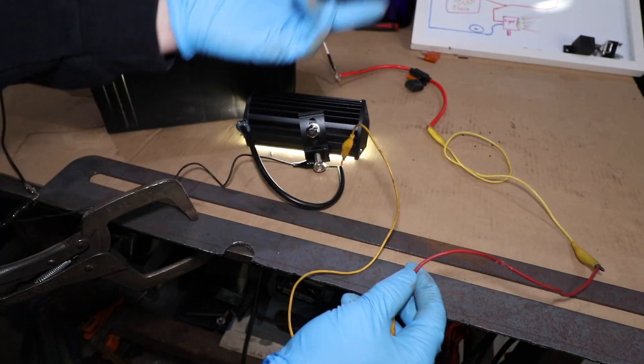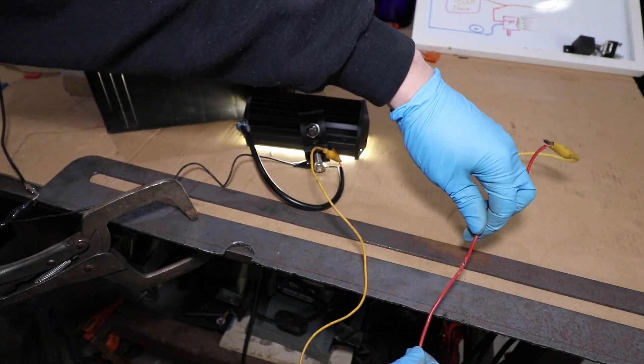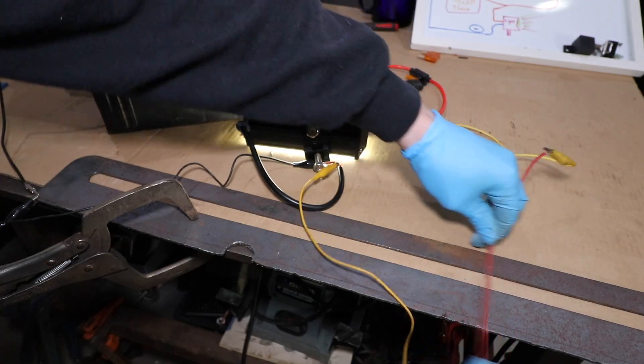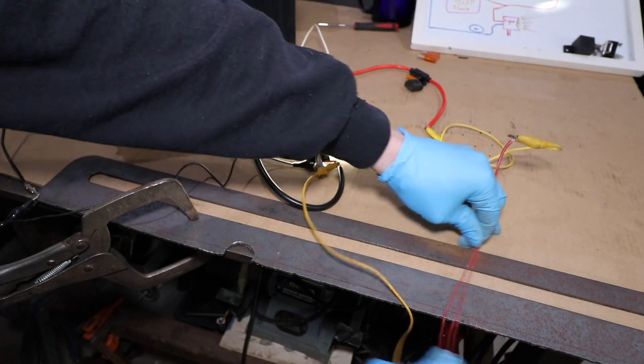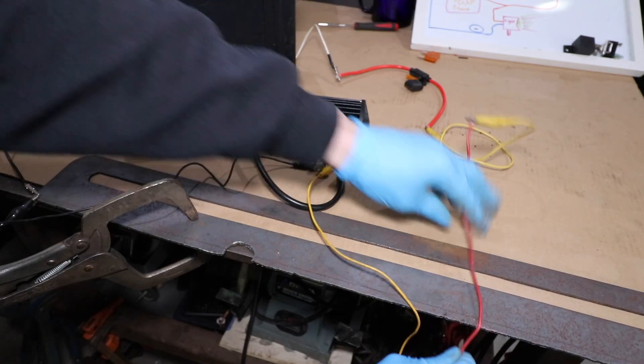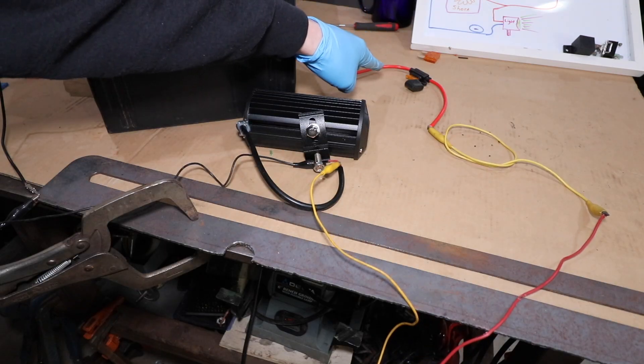Commonly what happens is this wire will be rubbing due to the car's vibration on a metallic object, and then eventually it's going to start sparking and hopefully it will blow the fuse.